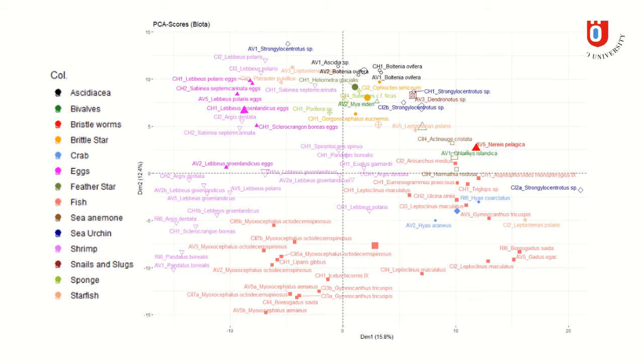So, here I analyze the biota samples separately now, and we can see that we have different clusters forming. So, for example, we have three clusters with shrimps, one in the middle, one to the left-hand side, and one in the upper corner.